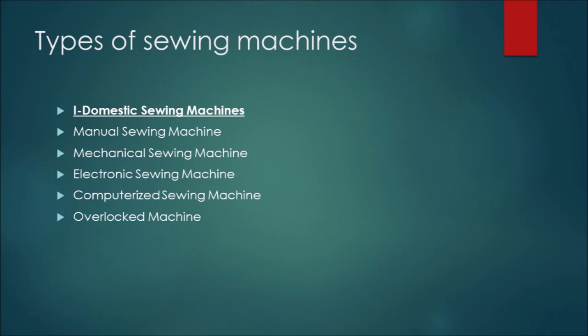Number two: mechanical sewing machine. It comes with a paddle and switch. We can determine the lengths and the widths of the stitch.